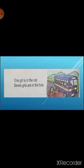Come to the next paragraph. 'One girl is in the car. Seven girls are in the bus.' See children, one girl is driving the car and so many girls are in the bus. When we will talk about one girl, we will use 'is', and when we will talk about more girls, then we will use 'are'.